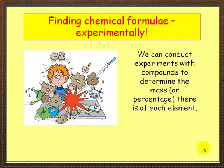First of all, finding chemical formulae experimentally. Now what we can do, as shown in this diagram here, we can conduct experiments with compounds to determine the mass or percentage of each element.